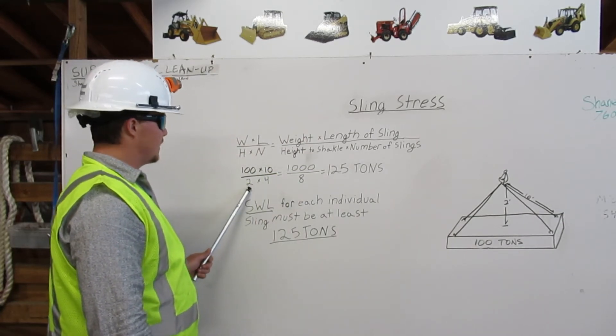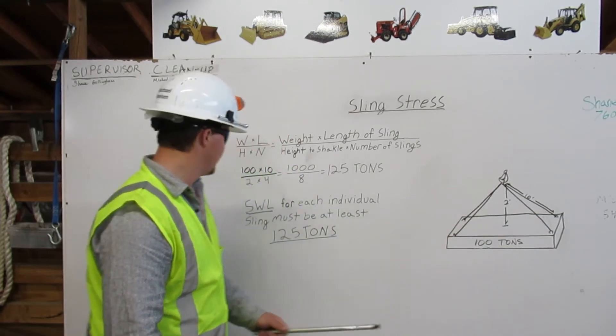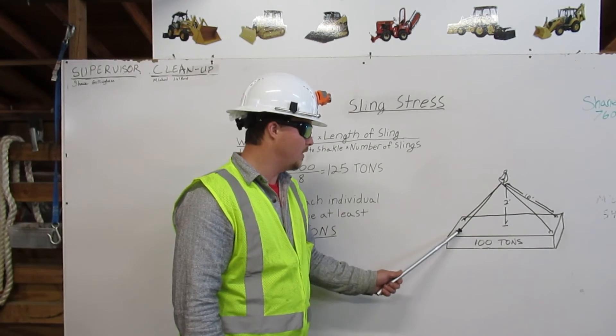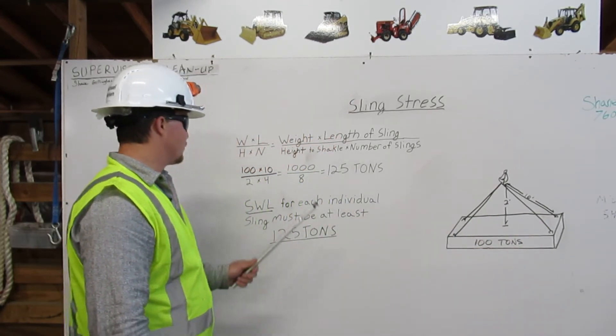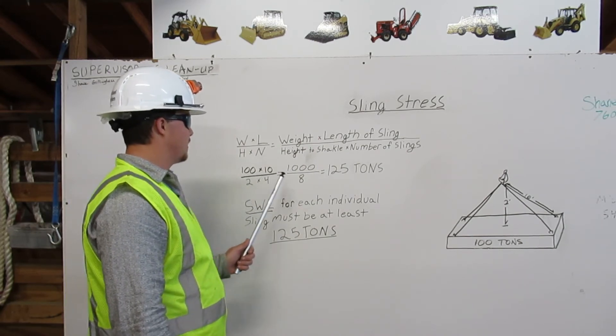Two is the height to shackle. From center of load to shackle is 2 feet. Four is the number of slings we have: one, two, three, four. Once we multiply this, we have the weight times the length is one thousand.